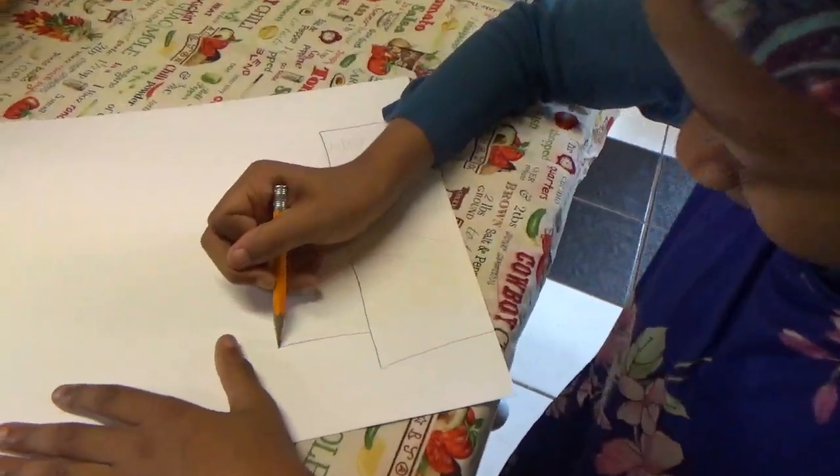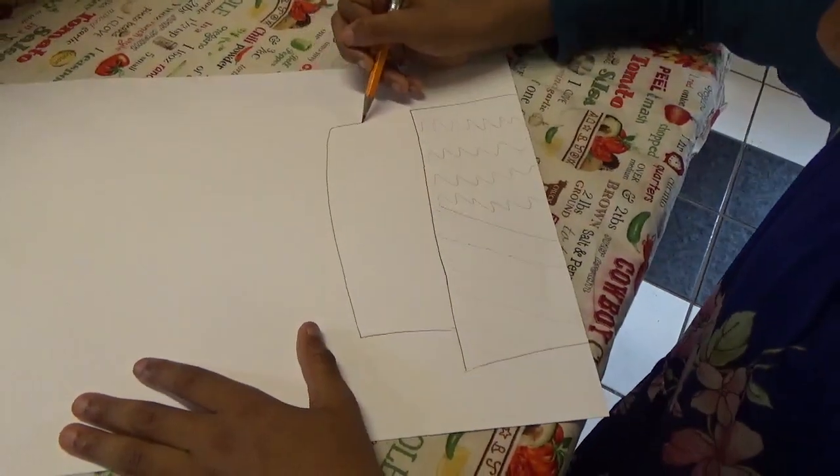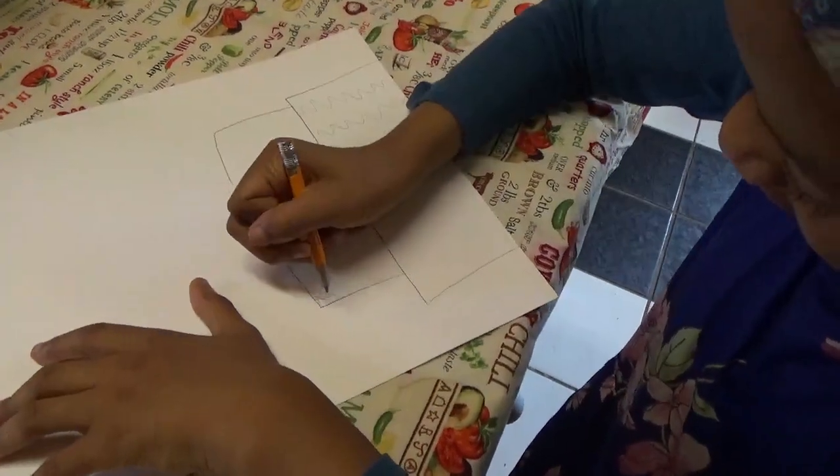After, we're going to do the same thing on top. Instead of this, it's smaller. Let's draw zigs on the other side.